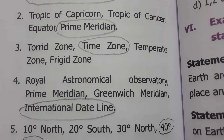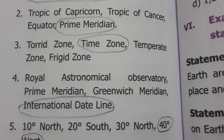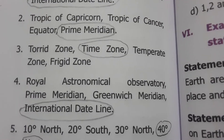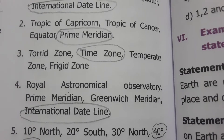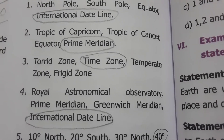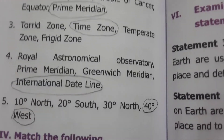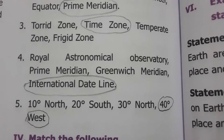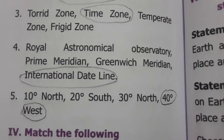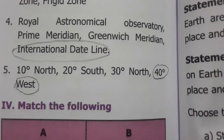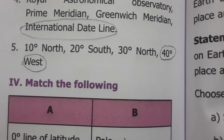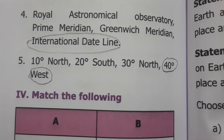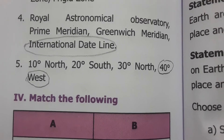Third set: torrid zone, time zone, temperate zone, frigid zone — torrid, temperate, and frigid zones are classified according to temperature in the concerned area, whereas time zone divides the Earth according to time, so time zone is the odd one. Fourth set: Royal Astronomical Observatory, prime meridian, Greenwich Meridian, International Date Line — the first three are related to time, whereas the International Date Line is for date purposes, so International Date Line is the odd one. Fifth set: 10 degrees North, 20 degrees South, 30 degrees North, 40 degrees West — the first three relate to the Northern and Southern hemispheres, but 40 degrees West relates to the Western Hemisphere, so it is the odd one.